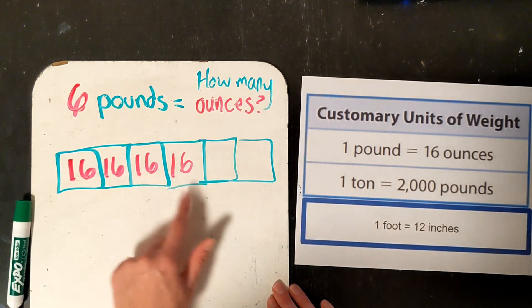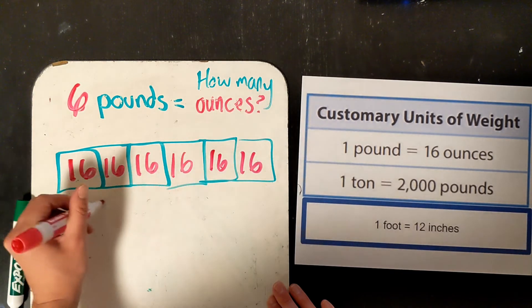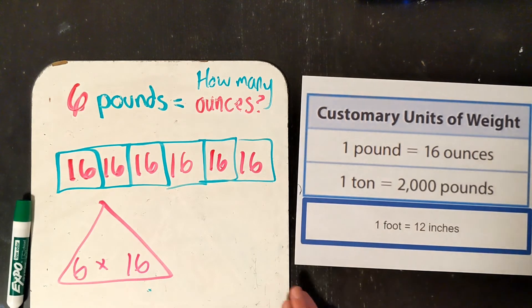So, 1, 2, 3, 4, 5, 6. So I am going to do 6 pounds times 16 ounces in each to get the answer.